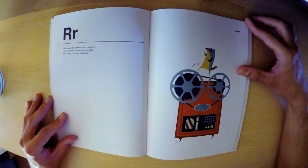R. Roxanne the rambunctious raccoon rocks out on a reel-to-reel recorder resonating rambling rockabilly.